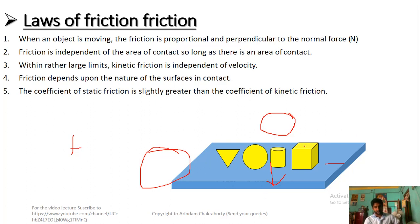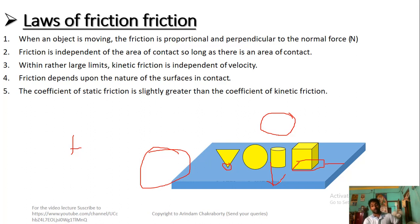Fourth law: friction depends on the surfaces in contact. Consider a cube, a cylinder, a sphere, and a triangle. If the point of a triangle is in contact, friction is less compared to the full flat face of a cube. So if it is a point-to-point contact, friction is very low; if a complete long surface is in contact, friction is maximum.